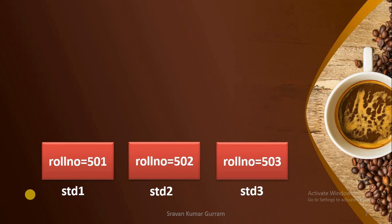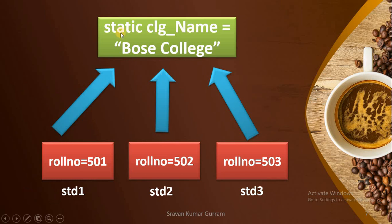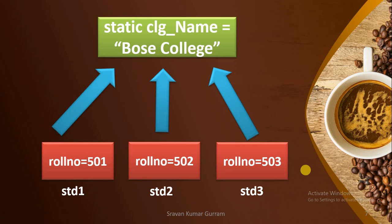Roll number is different from one student to another, but college name is the same for all students. Whenever you have this type of common property for all objects, it is better to create that variable as a static type. In our example, create the variable college name as a static type. Then, only a single copy is created and that single copy is shared among all your objects. If you don't create it as static, each object maintains a separate slot for college name, and memory is wasted.